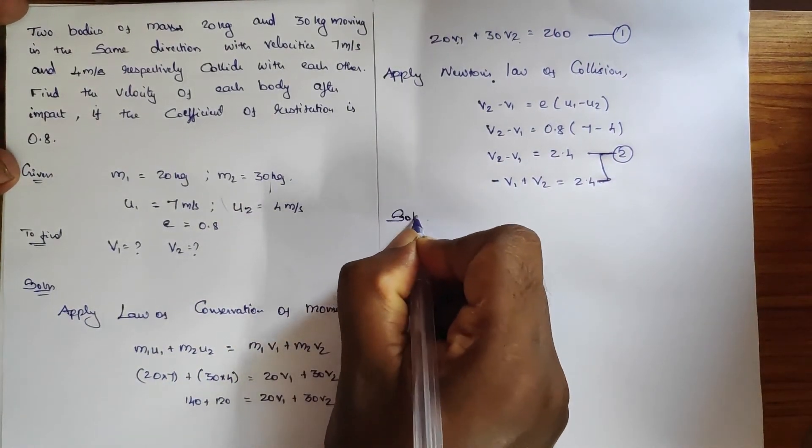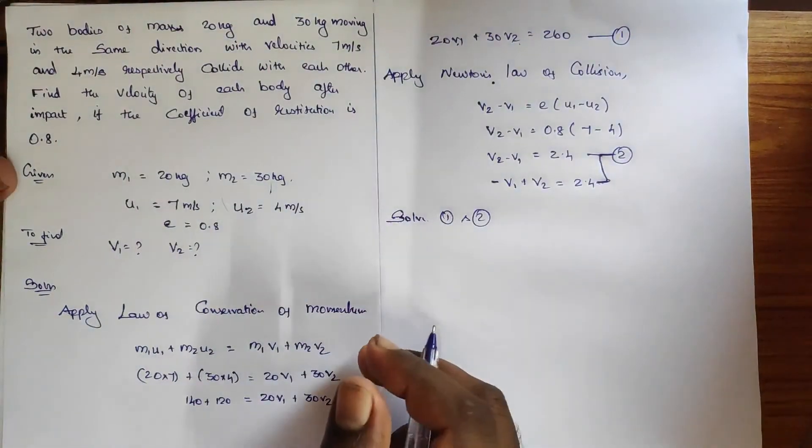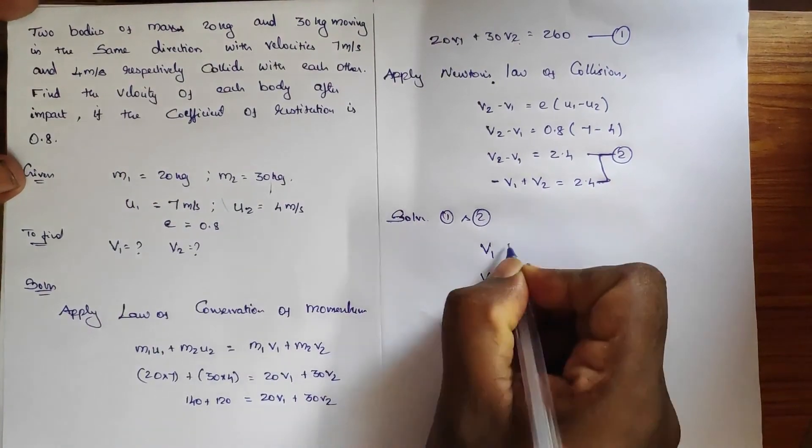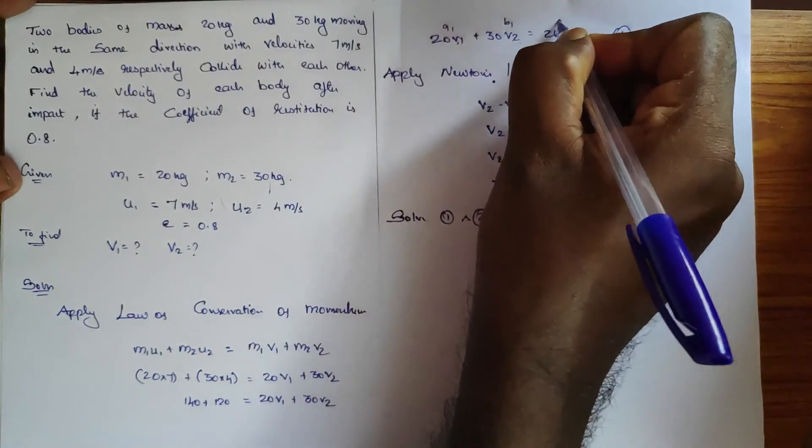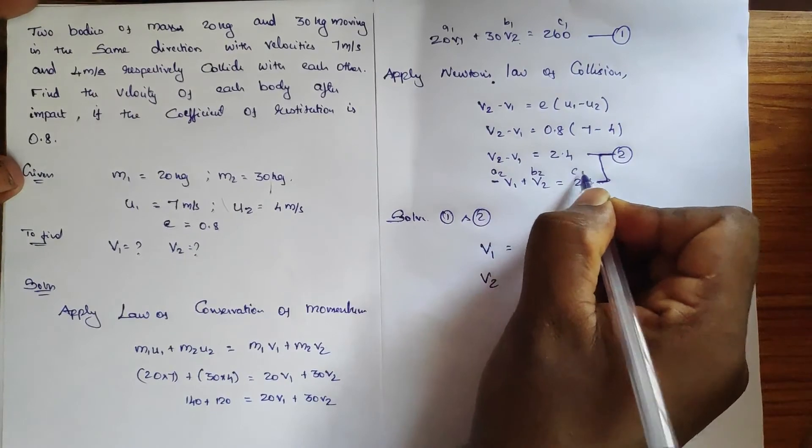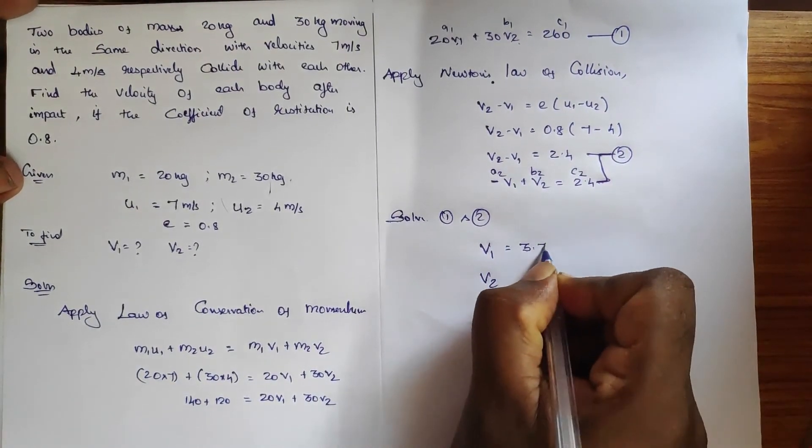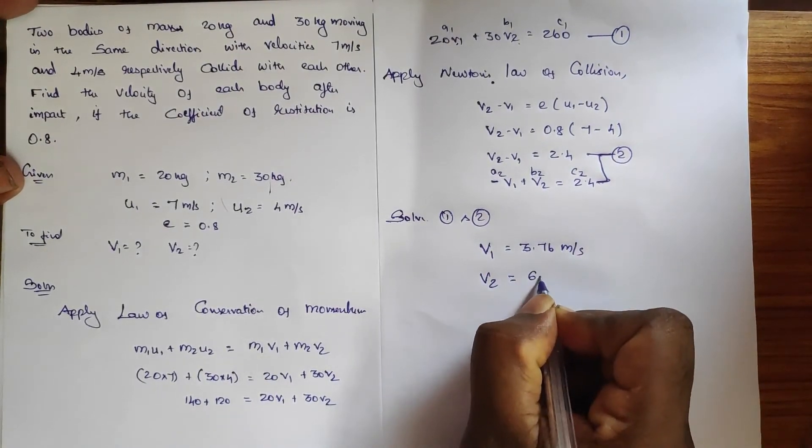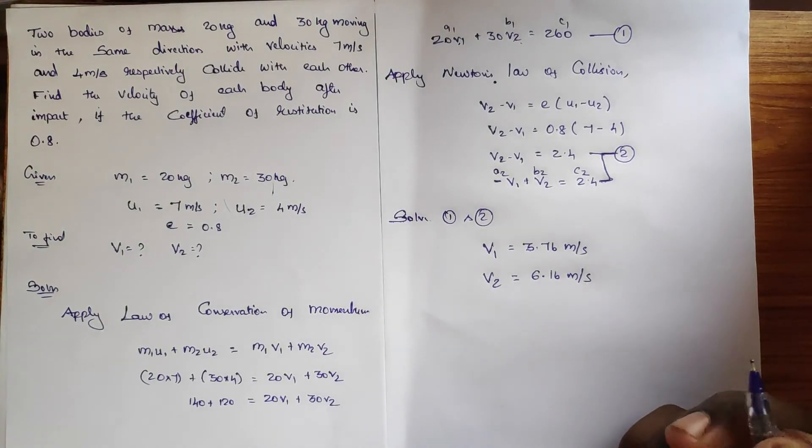Just solve equation 1 and 2 for v1 and v2. If you put it in your calculator, you may get the answer for v1 and v2. You may use a1, b1, c1 in the calculator, or a2, b2, c2.